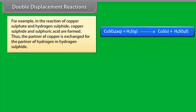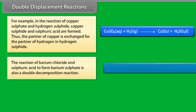Thus, the partner of copper is exchanged for the partner of hydrogen in hydrogen sulfide. The reaction of barium chloride and sulfuric acid to form barium sulfate is also a double displacement reaction.